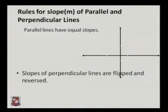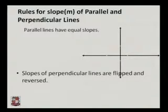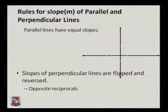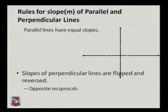The slopes of perpendicular lines are flipped and reversed — that means opposite sign and reciprocal. So they are opposite reciprocals of each other.